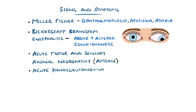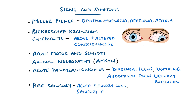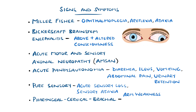Acute pandysautonomia presents with autonomic features like diarrhoea, ileus, vomiting, abdominal pain, and urinary retention, as well as disturbance in heart rate and blood pressure. Another type is pure sensory, characterised by acute sensory loss and sensory ataxia, and the pharyngeal-cervical-brachial type, featuring acute arm weakness, swallowing dysfunction, and facial weakness.